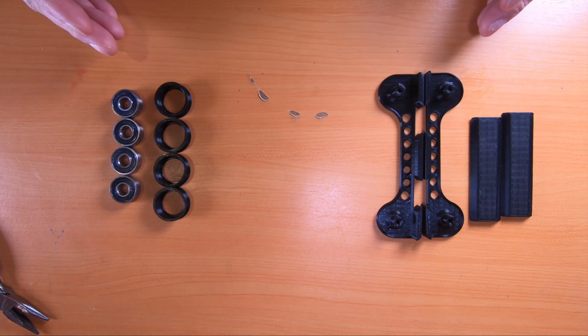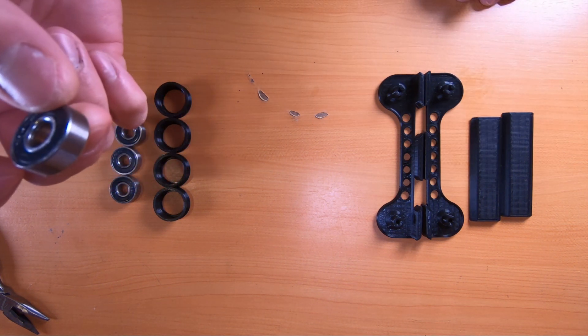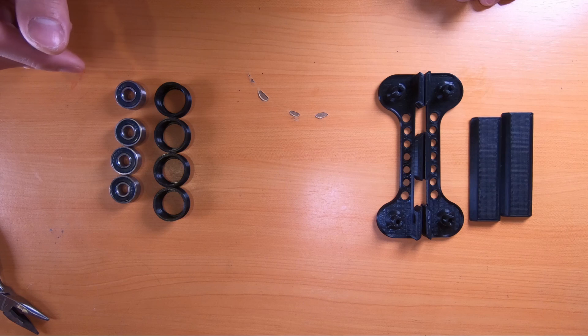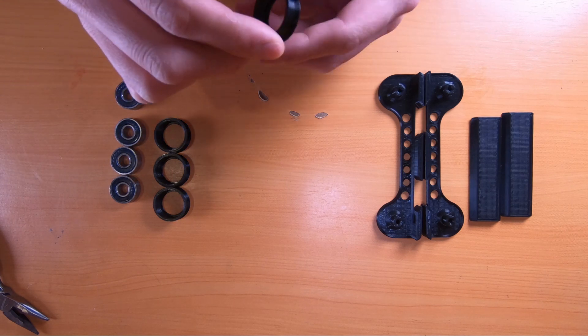Okay, now that we have all our printed parts and, of course, I put together the bearings again. Let's go ahead and start the assembly process. Of course, you're going to want to make sure, especially on the bearing rollers, that you remove any source stringing.